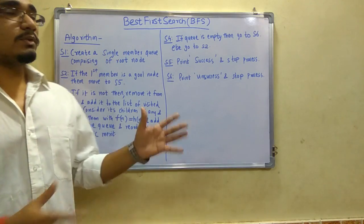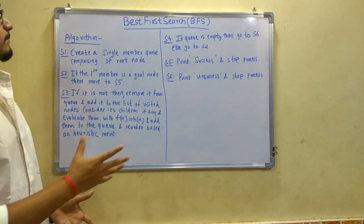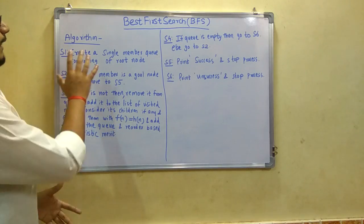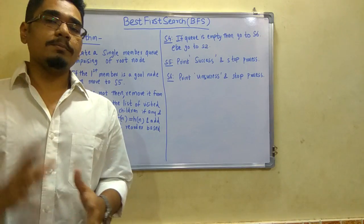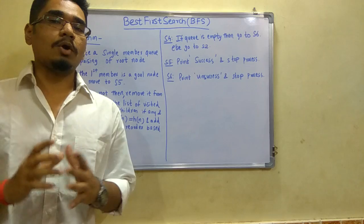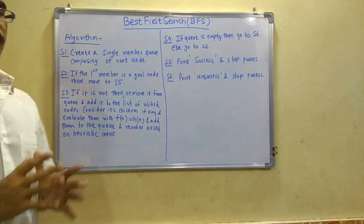So let's get started. This is the algorithm of the BFS algorithm. Basically it says we have to create a single member queue comprising of the root node. The root node will be the node at the top of the tree that we are going to search.